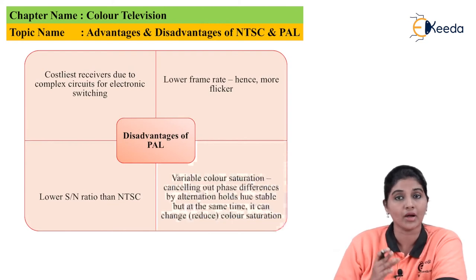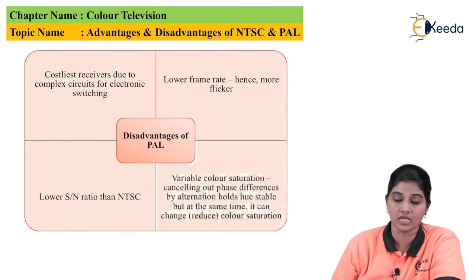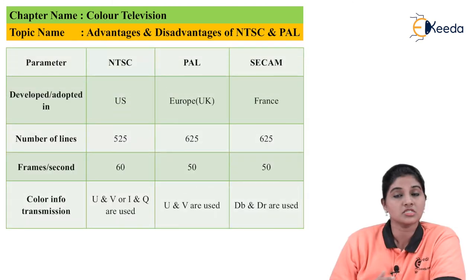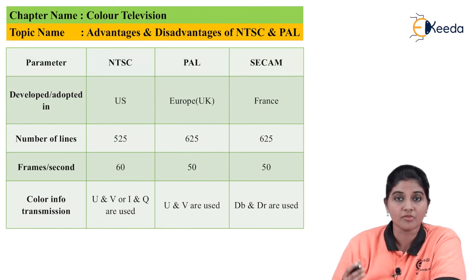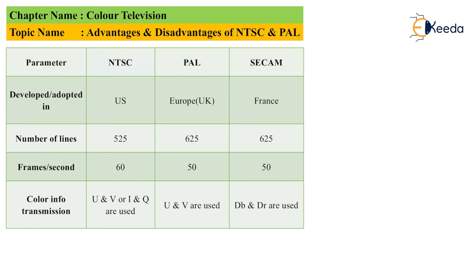Now let's move on to the comparison between PAL, NTSC, and SECAM. On the basis of various parameters like number of lines and frame rate, we are going to distinguish between the three. For development: NTSC is developed by America (US), PAL is considered a European standard, and SECAM is developed in France. For number of lines: NTSC uses 525 lines, while PAL and SECAM use 625 lines. For frame rate: NTSC uses 60 frames per second, whereas PAL and SECAM use 50 frames per second.